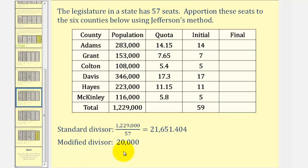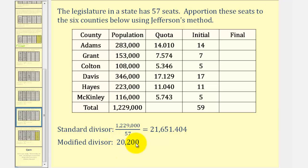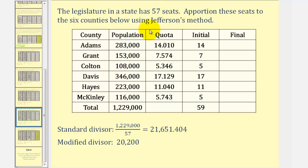So now we need to increase the divisor. Let's try 20,200. Recalculating the quotas and removing the decimal part, with a divisor of 20,200 we have an allocation of 14, 7, 5, 17, 11, and 5. Again, this gives 59 seats, and we only have 57, so we increase the divisor again.